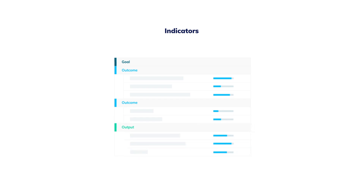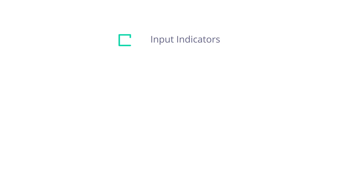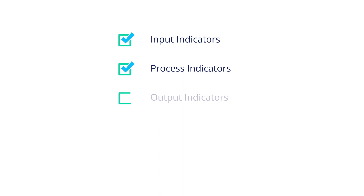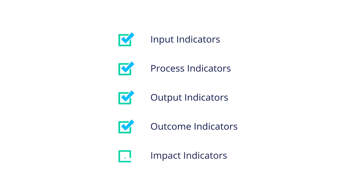In other words, indicators help us to measure our achievement and see the difference our interventions are making. Some common indicators include input indicators, process indicators, output indicators, outcome indicators, and impact indicators.